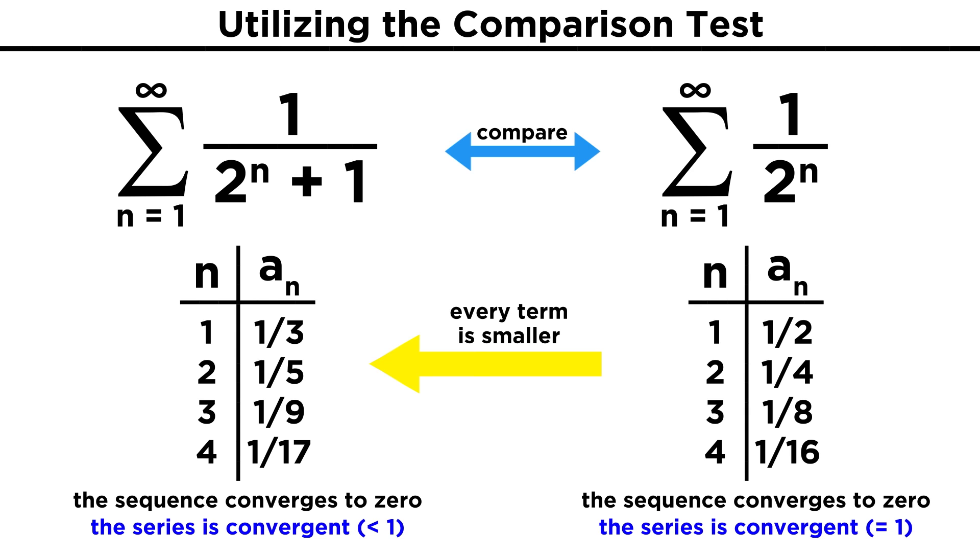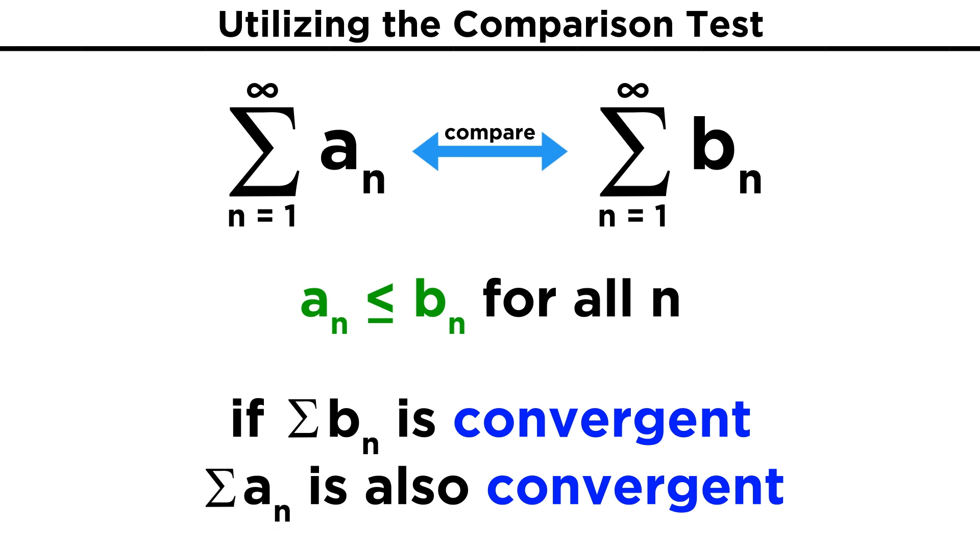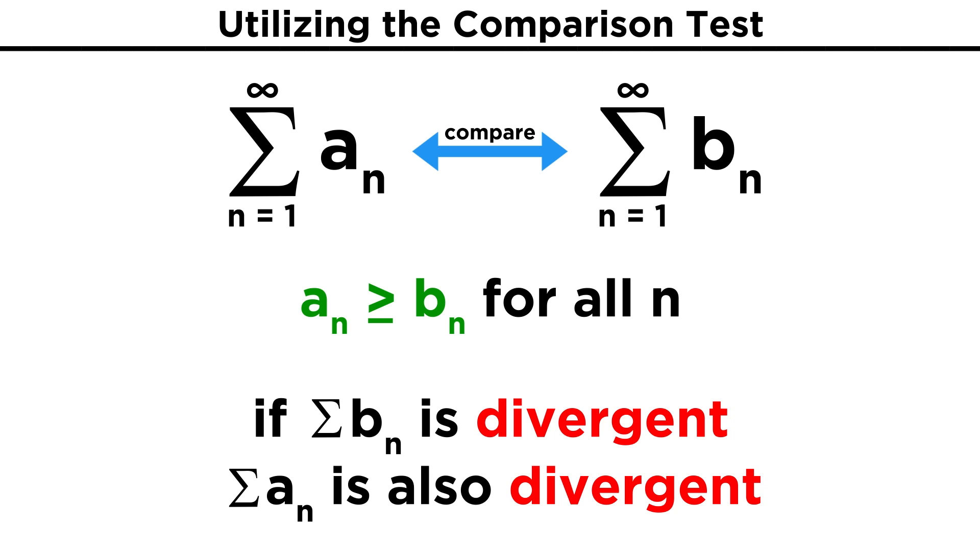So we aren't calculating the precise sum with the comparison test, but it is a useful tool for determining whether a series is convergent or divergent. If every term in a series is smaller than each corresponding term in another series that is known to be convergent, then it too must be convergent, as we just saw. On the other hand, if every term in a series is larger than each corresponding term in another series that is known to be divergent, then it too must be divergent.